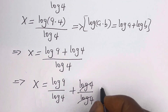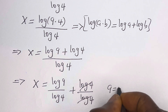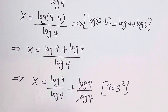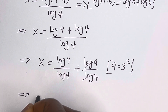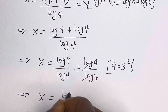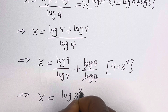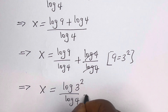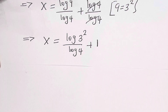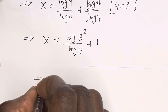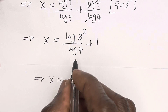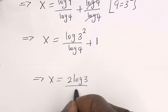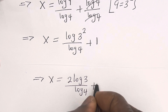Note that 9 is equal to 3 squared. Then s is equal to log(3²) over log 4 plus 1. From here we have s is equal to (log(3²) over log 4) plus 1.